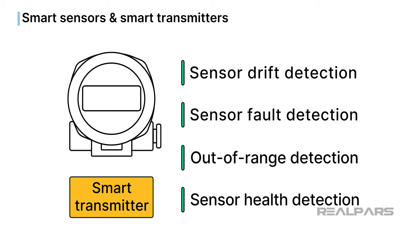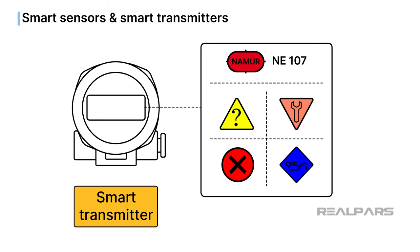When faults or anomalies are detected, smart transmitters often display error codes or trigger alarms to alert operators or control systems about the issue. This feature holds significant power, as ensuring safe and efficient plant operations is a top priority. We'll dive further into this topic when we explore NAMUR NE107, a standard that leverages diagnostics in smart devices.